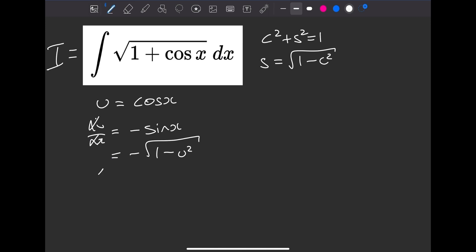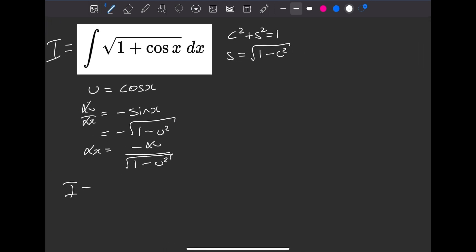So we can rearrange and see that dx equals minus du over the square root of 1 minus u squared. So we'll go and plug all that in, and our integral will become the integral of square root of 1 plus u, multiplied by du. The minus can go over here, and on the bottom we'll have the square root of 1 minus u squared.